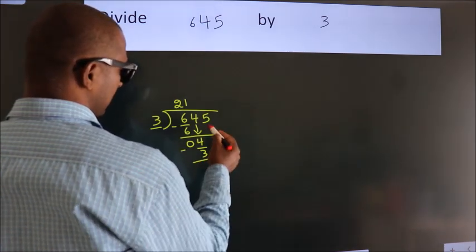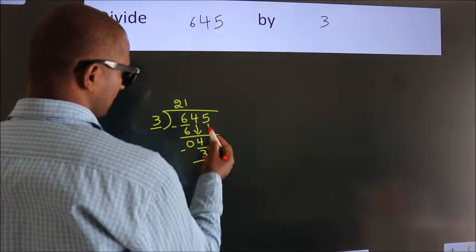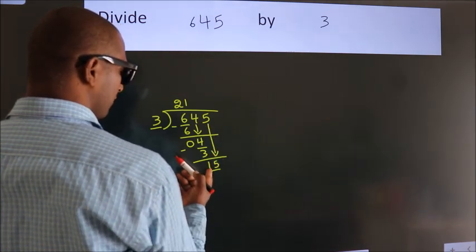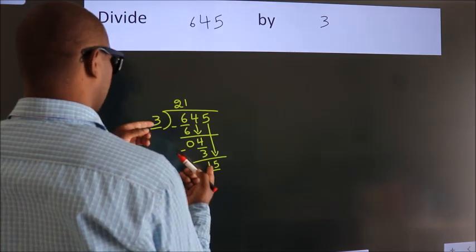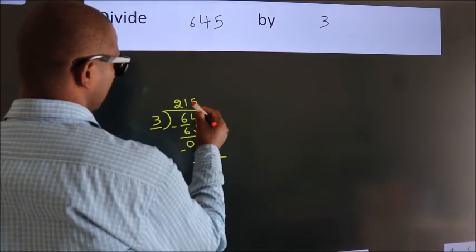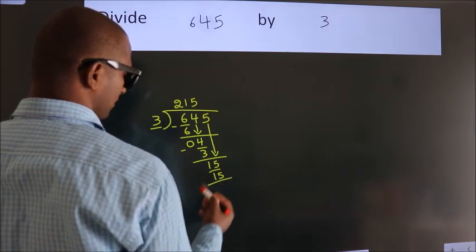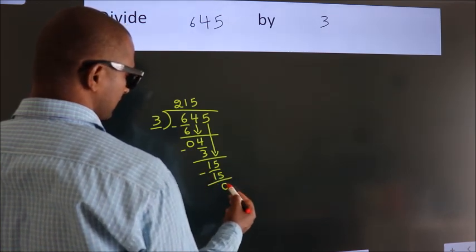After this, bring down the beside number, so 5 down, so 15. When do we get 15? In 3 table, 3 5s, 15. Now, we subtract, we get 0.